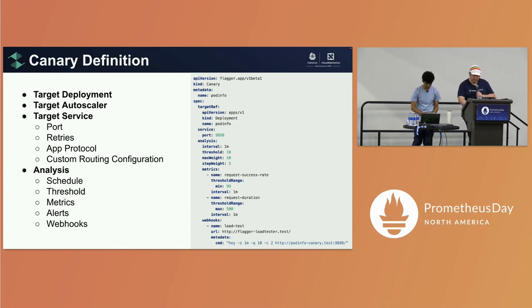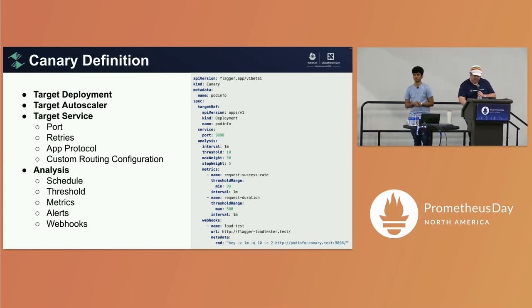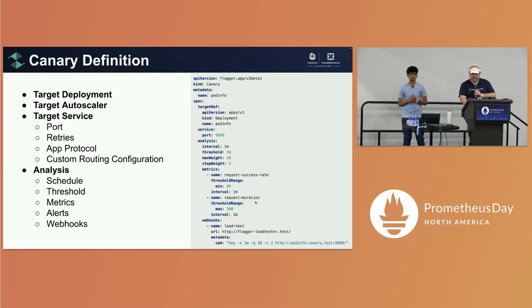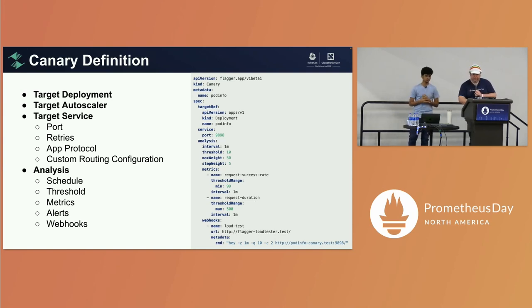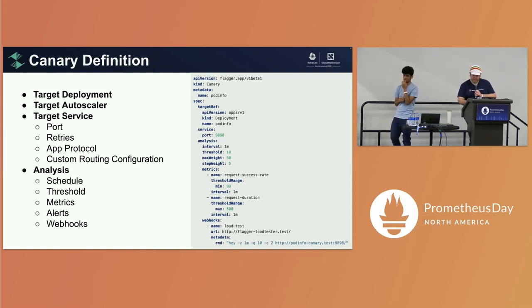The max weight is the point at which we should stop increasing the canary. Step weight is how much we add each iteration — for example, every 5%. The metrics section is the really interesting part because we can add custom metrics or any kind of metric.